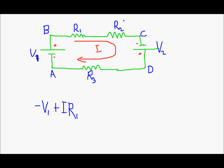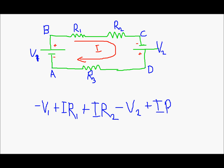The next thing I have is R2, and again I am travelling in the direction of current, so I will have plus IR2. Then I will reach C. From C to D, I will first see the negative plate of V2, so I will write minus V2. And with that I reach D. From D to A I find R3. I am travelling in the direction of current, so I will write plus IR3. And this is equal to zero.